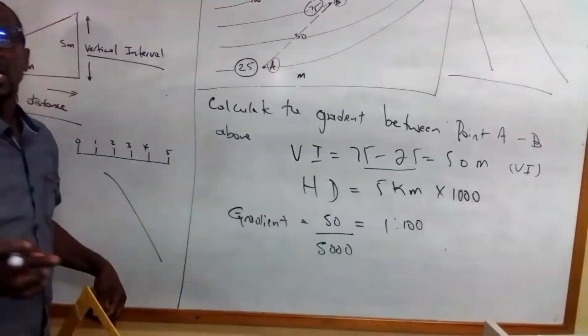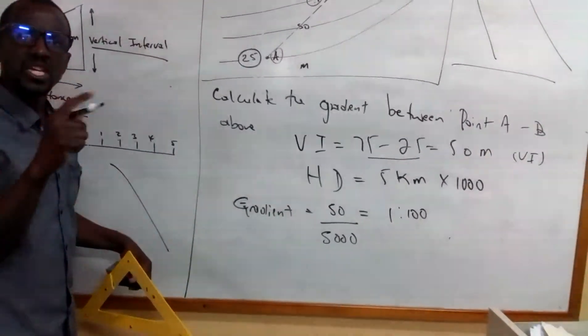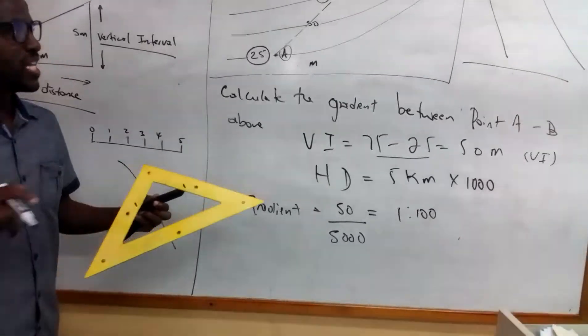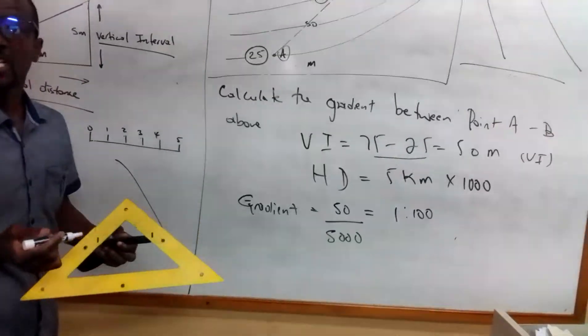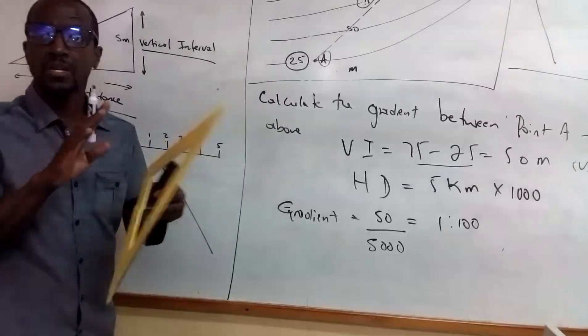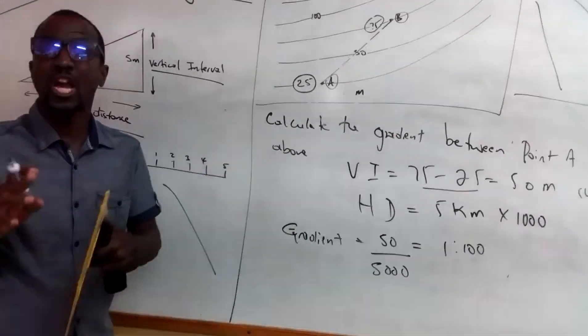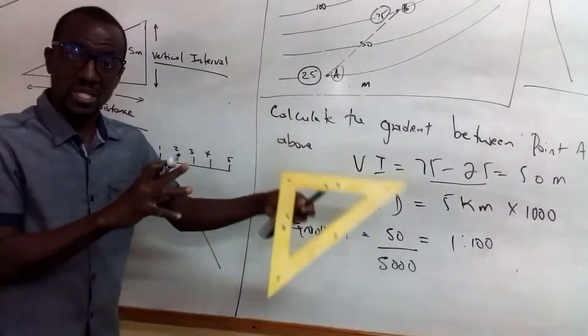Now five kilometers cannot be worked out with, let's say, 50 meters because here you have two different measurements, you have meters and kilometers. You have to have them in the same measurement unit.